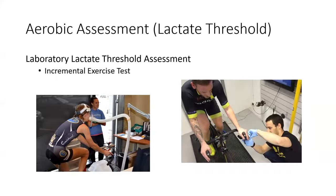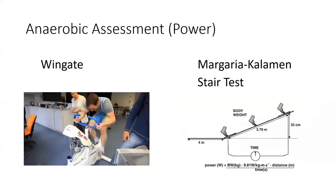Lactate threshold testing is more complex and requires equipment you may not have available, but if you're working with elite individuals, you may have access to it. For anaerobic power, the Wingate test is the gold standard — a 30-second all-out cycling effort using a percentage of body weight as resistance. It gives you an indication of maximal anaerobic output as well as your ability to maintain it over 30 seconds. It is extremely difficult and painful.